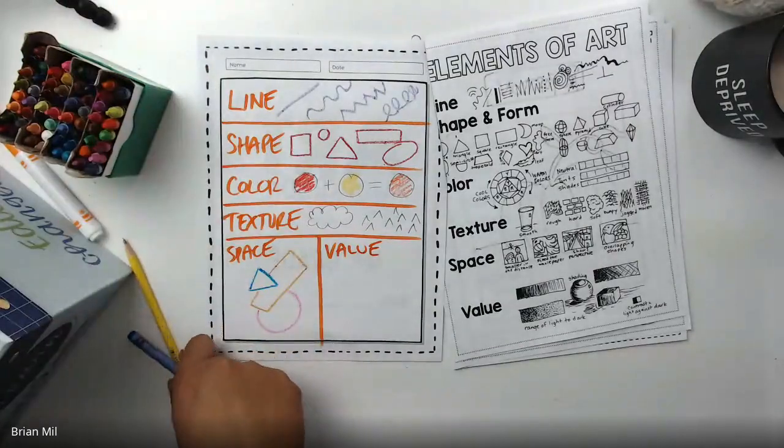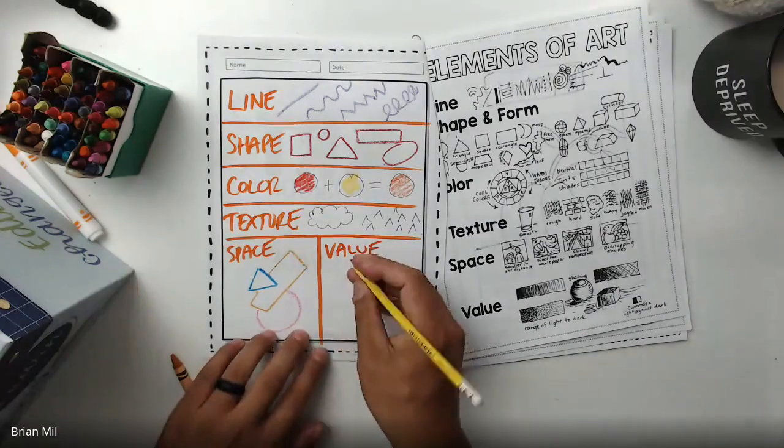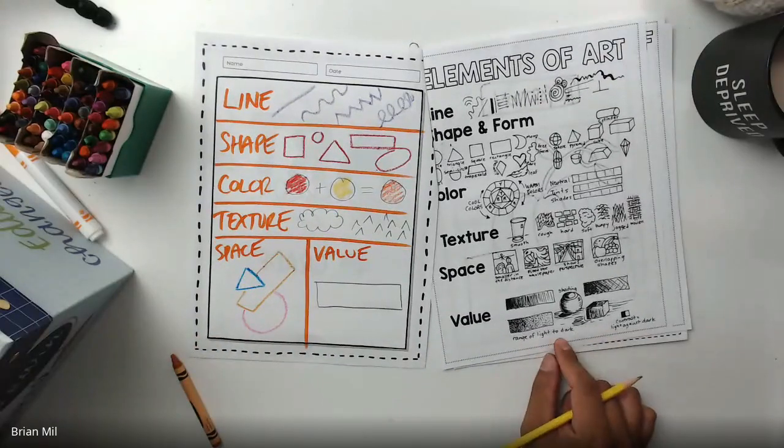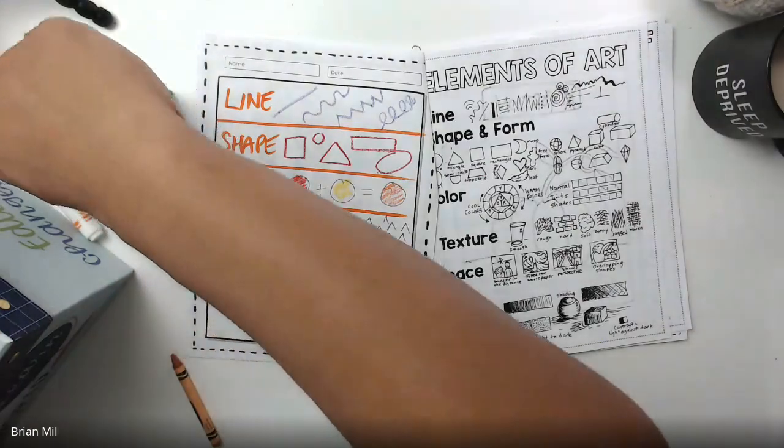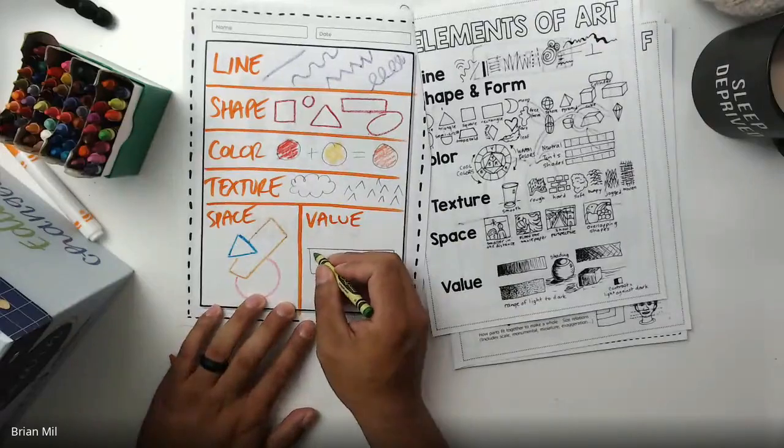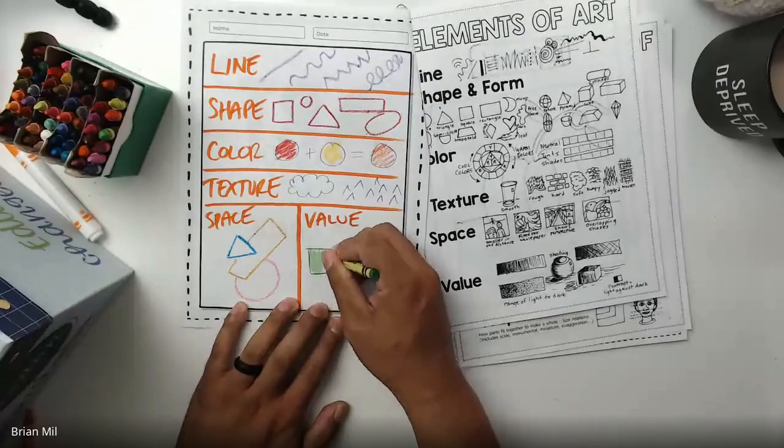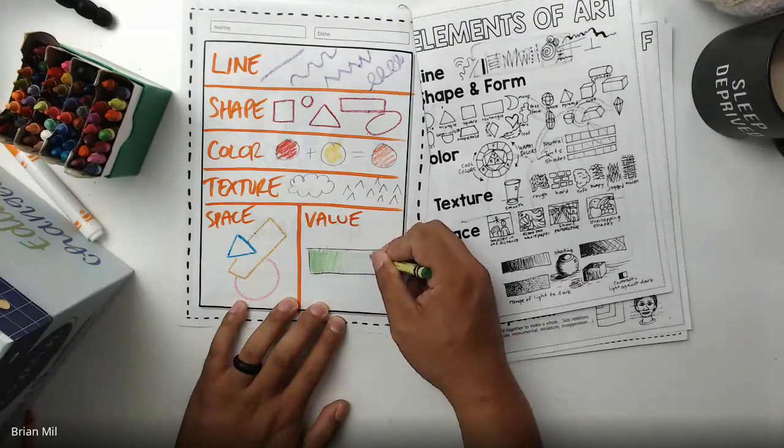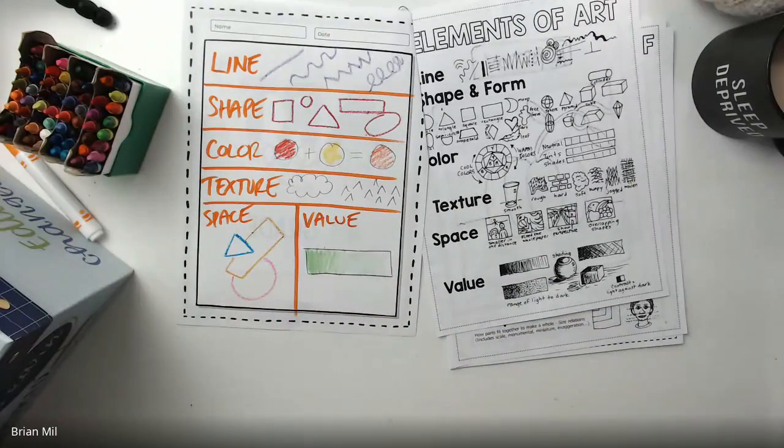All right. Next one, value. Value, I'm going to create a rectangle. And basically what value is, it's the ranging from light to dark. So I'm going to pick a random color. I'm going to pick, let's see, this color maybe? Green. And I'm going to try, do my best to go from light to dark using a crayon or anything that you have readily. You can use it in pencil too. So I'm going to go from dark, pressing hard, pressing lighter, and then all the way to barely pressing the crayon down. There. Value. Easy.